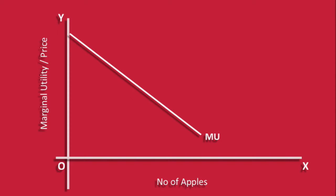MU is the marginal utility curve. Marginal utility diminishes as the consumer consumes more apples. Hence the curve slopes downwards. P is the market price. The consumer can buy as many apples at this price.